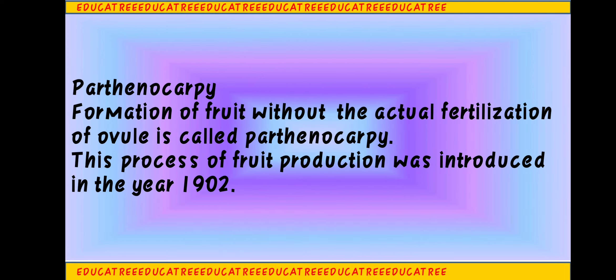Our next topic is Parthenocarpy. Parthenocarpy is a process where fruit formation occurs without fertilization. The male gamete does not fuse with the female gamete, so no zygote is formed. Parthenocarpy fruits are fruits where fertilization does not happen at all — fruit formation occurs without fertilization. This process was first introduced in 1902. Examples of Parthenocarpic fruits include: Annona squamosa, Actinidia arguta, Cucumis sativus, Alcea oleifera, and Citrus clementinae — many fruits we eat without knowing they are Parthenocarpic.